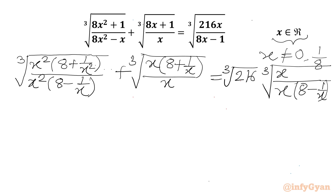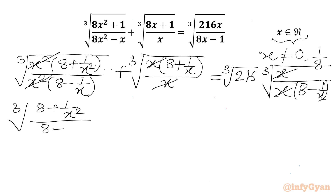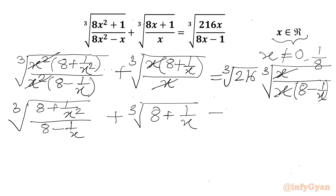Now we can cancel x² from numerator and denominator, and here x will be cancelled out. So we can write our equation as: cube root of (8 plus 1 over x²) over (8 minus 1 over x), plus cube root of (8 plus 1 over x), equal to 6. Since 216 is 6 cubed, so we can write 6, times cube root of 1 over (8 minus 1 over x).